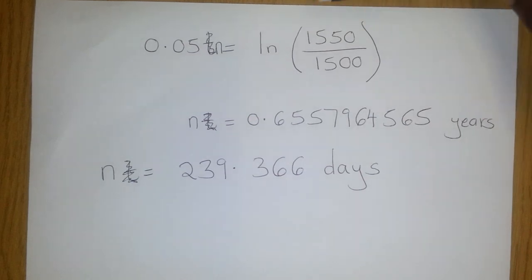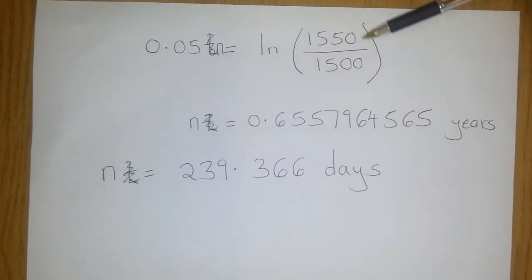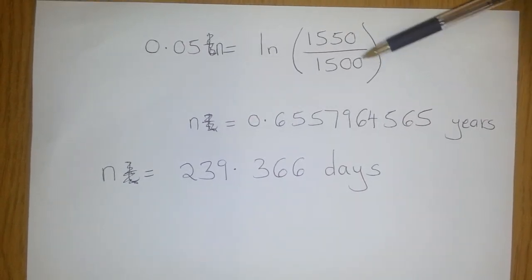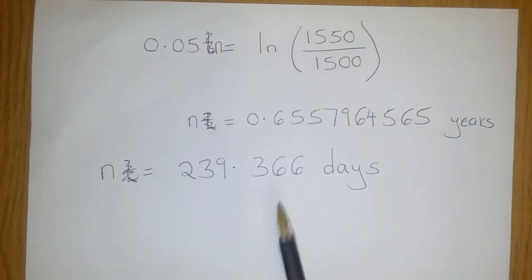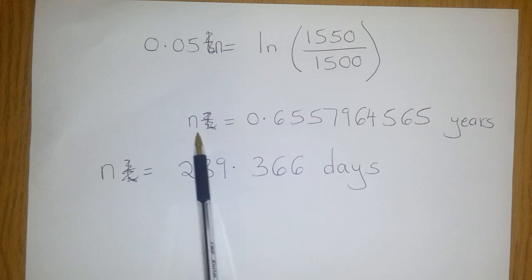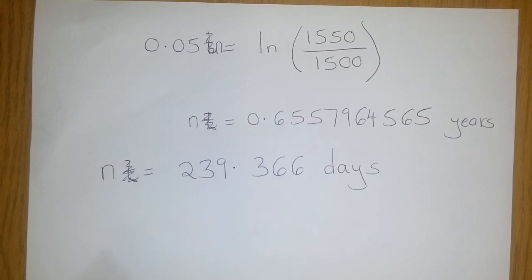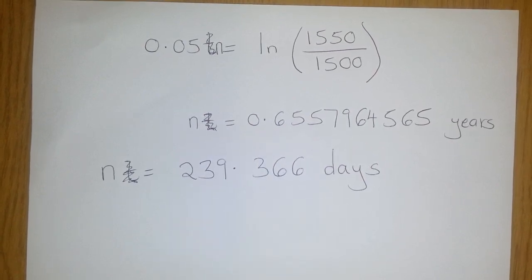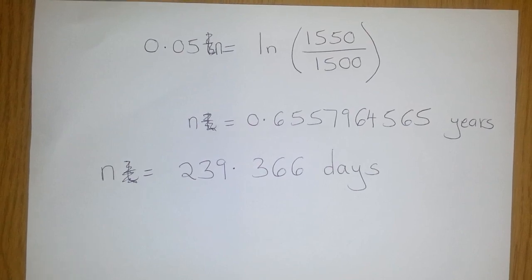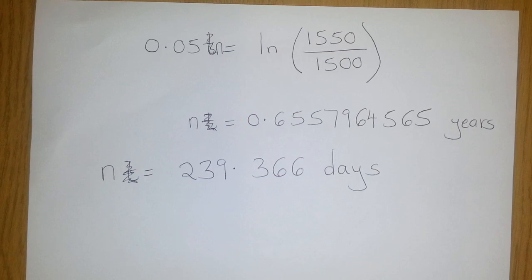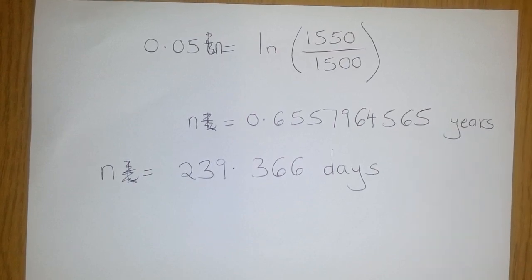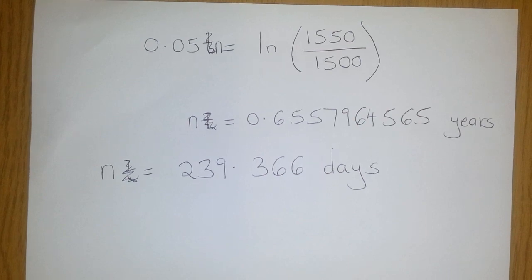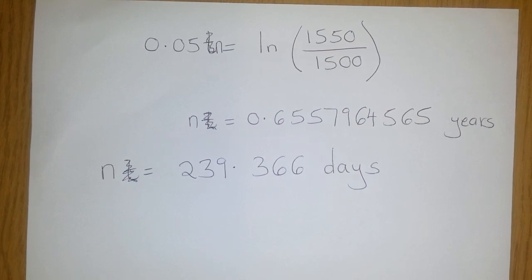0.05n is equal to the natural log of 1550 divided by 1500. Please note that this is 0.05n. Now you get n as equal to 0.655796456565 years. To convert it to days, you multiply this by 365 to end up with 239.366 days.